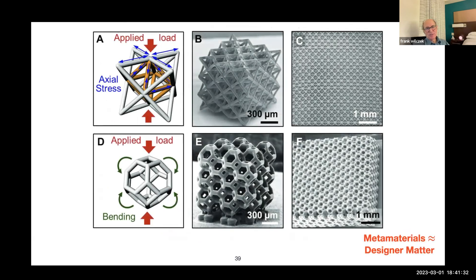And metamaterials are designer materials on a larger scale. This is just one example where by using these kinds of building blocks, you can make materials that are very, very strong and yet light because they have lots of empty space. But this will happen.